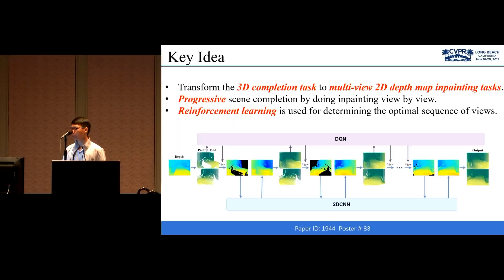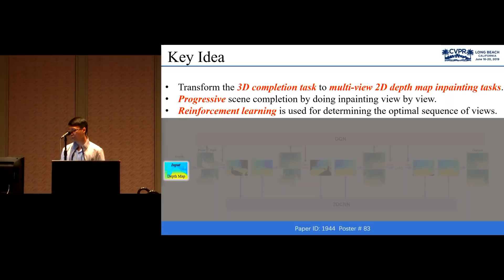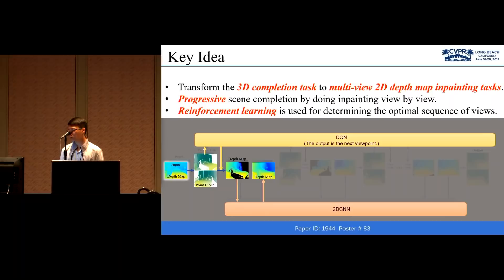Here are our key ideas. First, we transform the 3D completion task to multi-view 2D depth map inpainting tasks, and then we do simulation by doing inpainting view by view progressively. And we choose reinforcement learning to determine the optimal sequence of views. And below is our baseline. Given a single depth map, we first reproject it to the point cloud, and we feed it to the viewpath network. Under the output viewpoint, we project the point cloud to a depth map, and then we inpaint it, update the point cloud, and do the projection, inpainting, updating again and again. Finally, we get the completed point cloud.